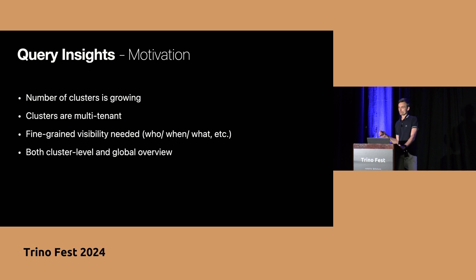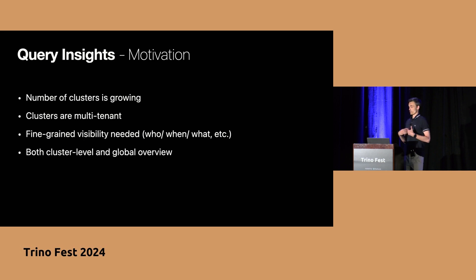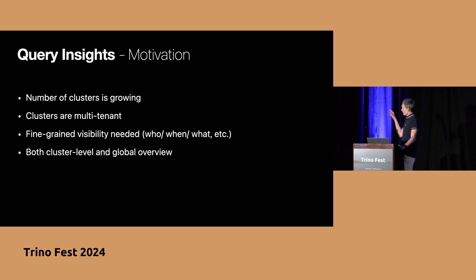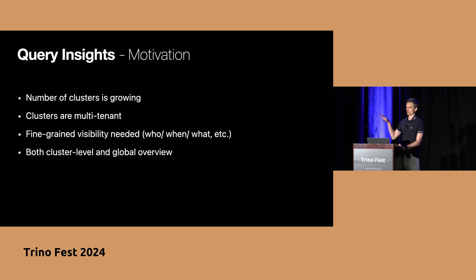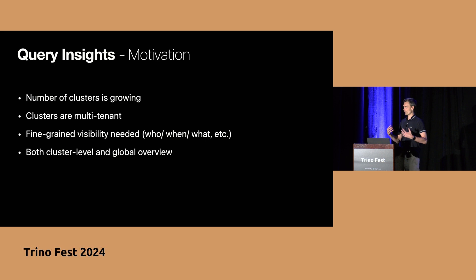Also, the clusters are multi-tenant. Whenever a team has a Trino cluster, it's not guaranteed to be segregated by use case — you might have a cluster used both for ad-hoc analytics and for reporting purposes. So it's important to have fine-grained visibility into what's happening in each cluster: which user is executing which queries, when, how long those queries execute, which ones fail, and so on. We need this overview both at the cluster level for individual cluster owners, and also at a global level for us as data platform developers to aggregate metrics across all clusters we manage.